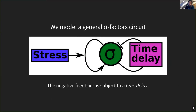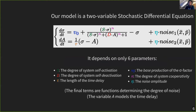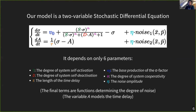We try to make a minimal mathematical model. We have a single component — the sigma factor — it activates its own production but also deactivates its own production. To ensure that this self-activation and self-deactivation don't cancel each other out, we add a time delay to the self-deactivation. What we really want to do is figure out what kind of behaviors this simple model is able to generate. We have one variable — the sigma factor — and a delay in the system.